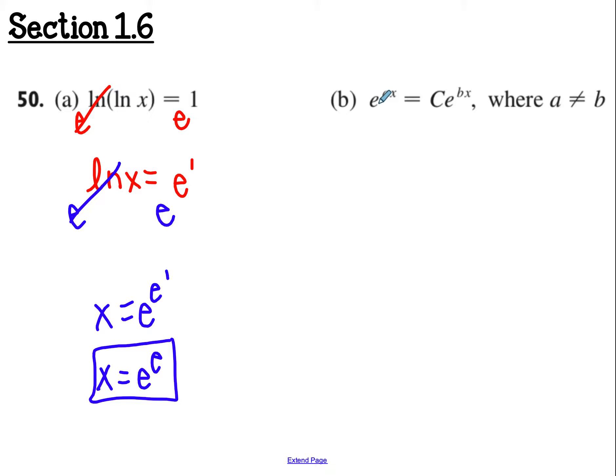The first thing I would do is get rid of this e by itself. So ln on both sides. Those will cancel. So I have ax equals ln of c times e to the bx.